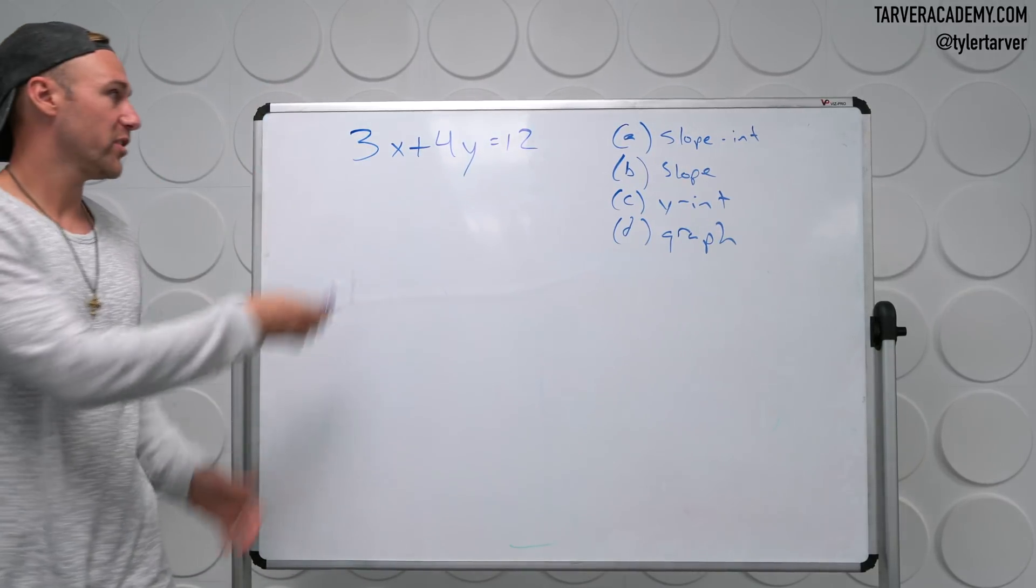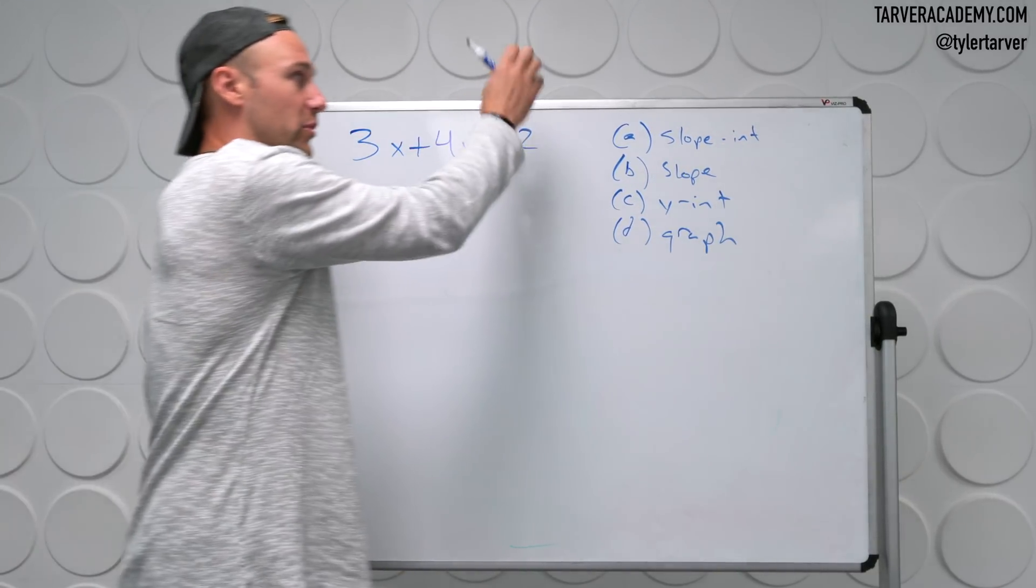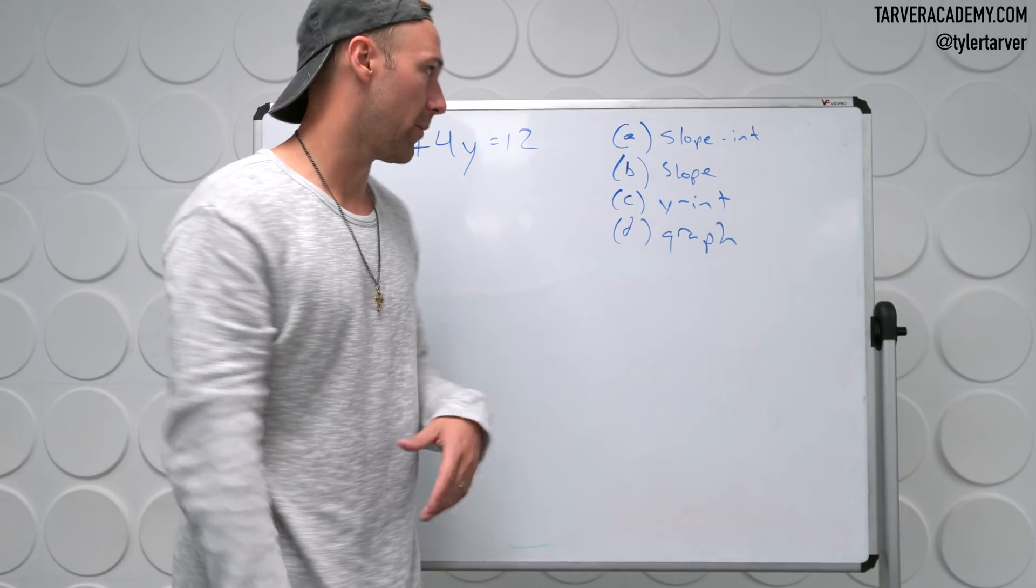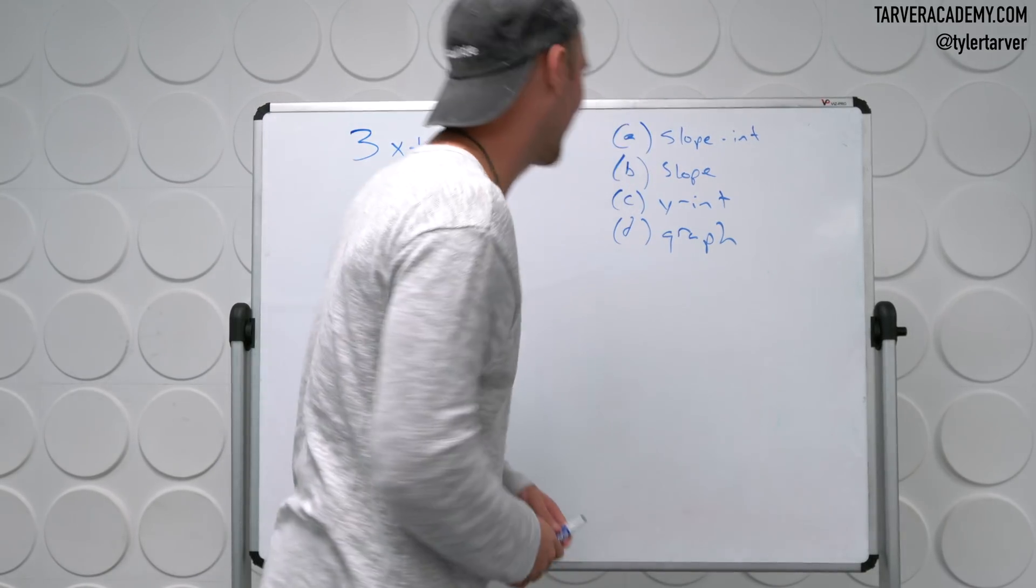This is in what's called standard form. You've got x, y equals a number. So it's what's called standard form. Hey, what up? Snapchat, how y'all doing?